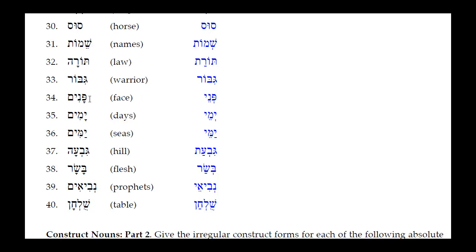Number thirty-two: Panim — the Hirik Yod Mem Sofit changes to a Seri Yod, and the Kamets under the Pe in the open unaccented syllable reduces to a simple Sheva. Result: Penei — 'faces.'